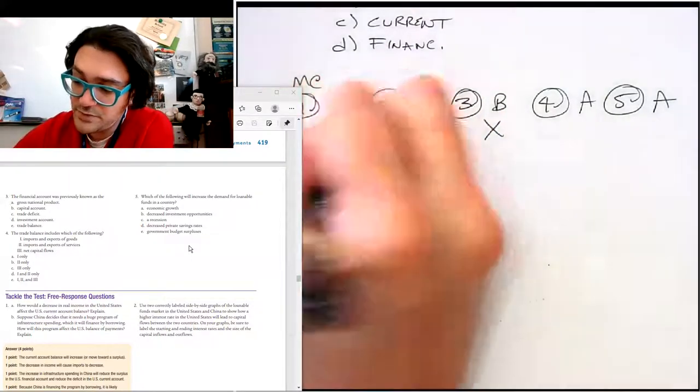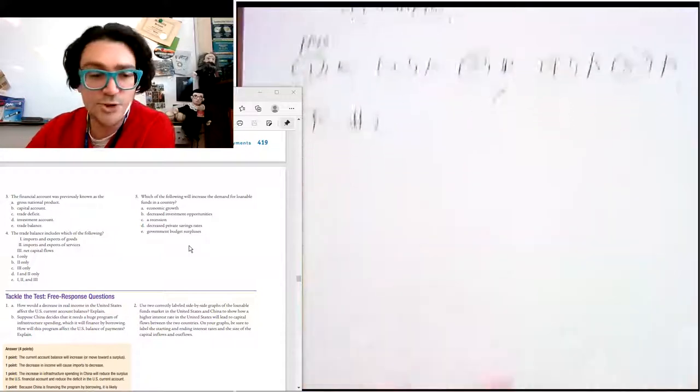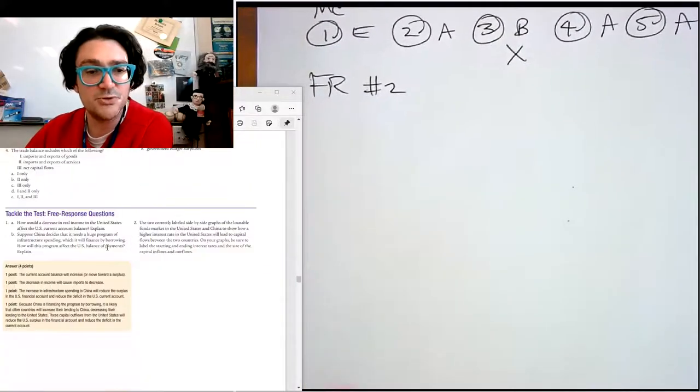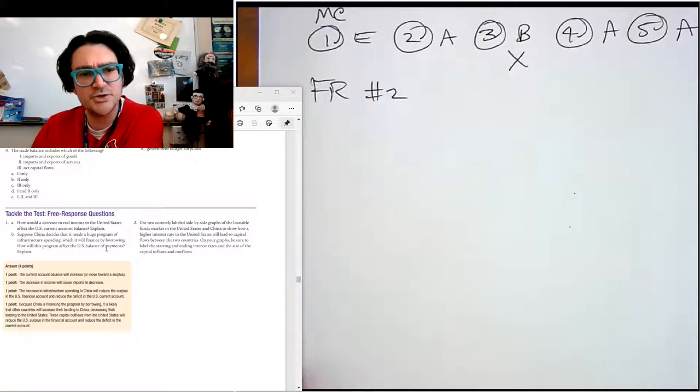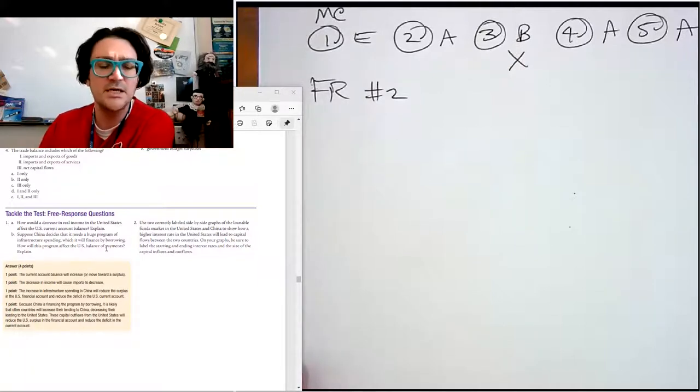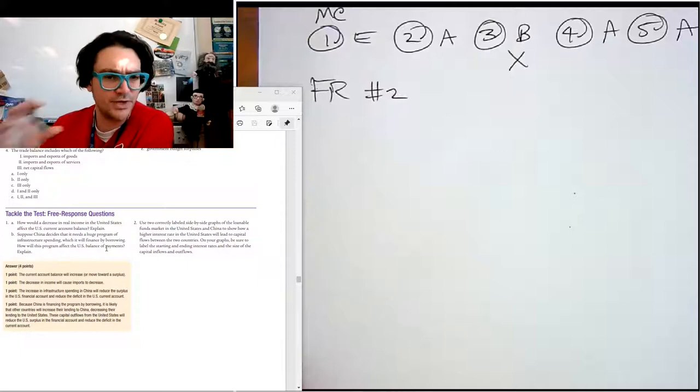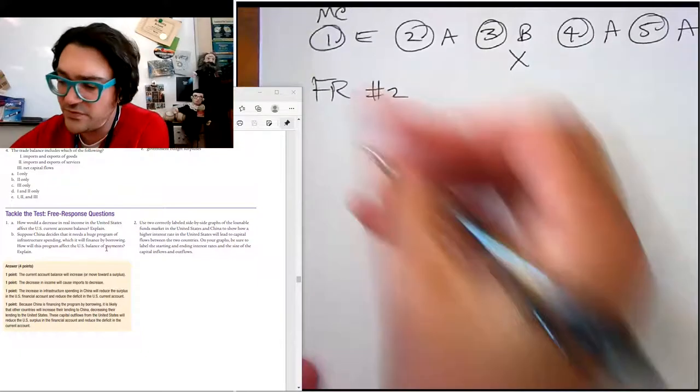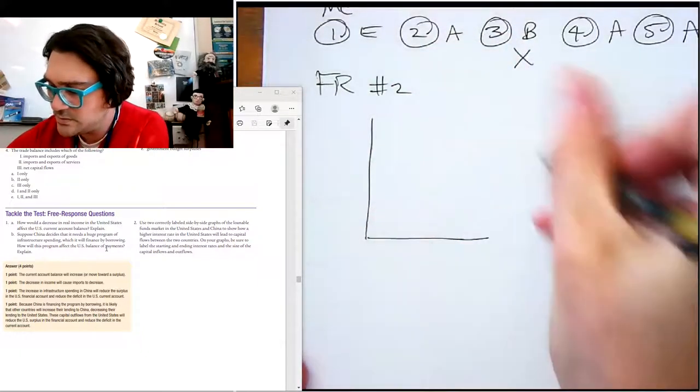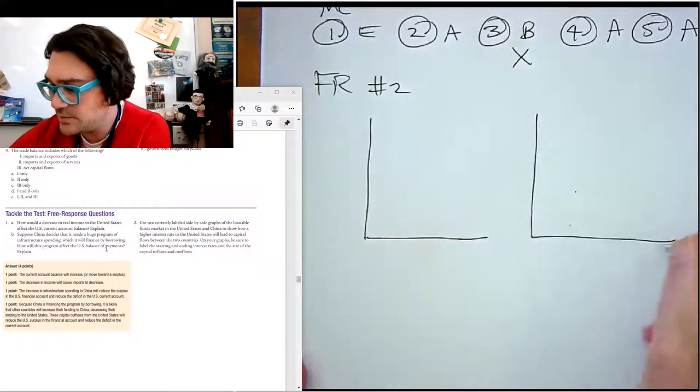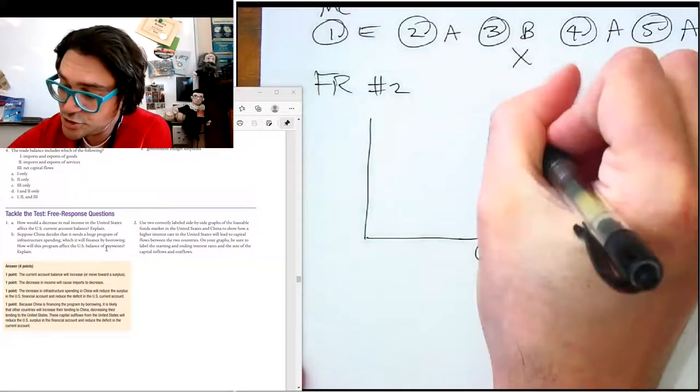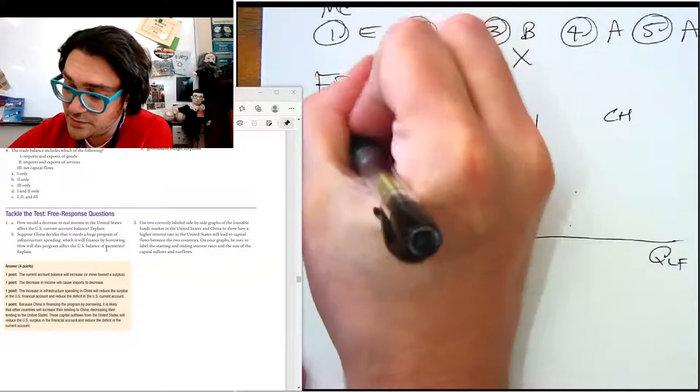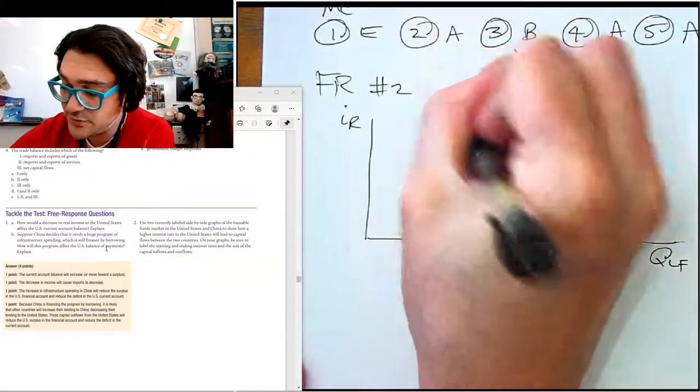All right. So let's take a look at free response number two. Now this one says, use two correctly labeled side-by-side graphs of the loanable funds market in the United States and China to show how a higher interest rate in the United States will lead to capital flows between the two countries. On your graphs, label the starting and ending and the size of the inflows and outflows. So we'll do two graphs.